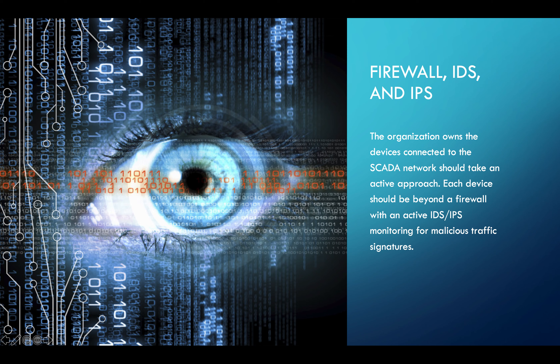For firewalls, IDS, and IPS: every IoT device in the SCADA network should have a firewall, IDS, and IPS. Most organizations today don't use these tools correctly, which is a problem. Each device should sit behind a firewall with active IDS and IPS monitoring for malicious traffic signatures.